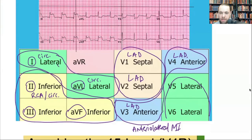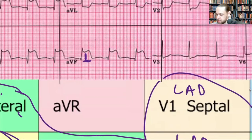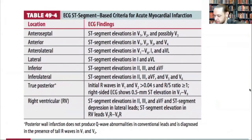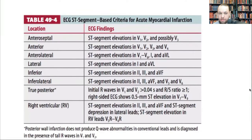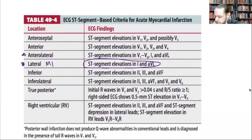ST segment depression and T-wave inversions signify ischemia. When you have ST segment elevations, that usually signifies ongoing injury — an infarct occurring — which is what we call a STEMI: ST segment elevation myocardial infarction. Looking at the chart: a lateral MI shows ST elevation in leads I and aVL. An anterior-lateral MI adds V1 through V6 in addition to I and aVL, because the LAD feeds the anterior wall. That's why those additional leads are also elevated.